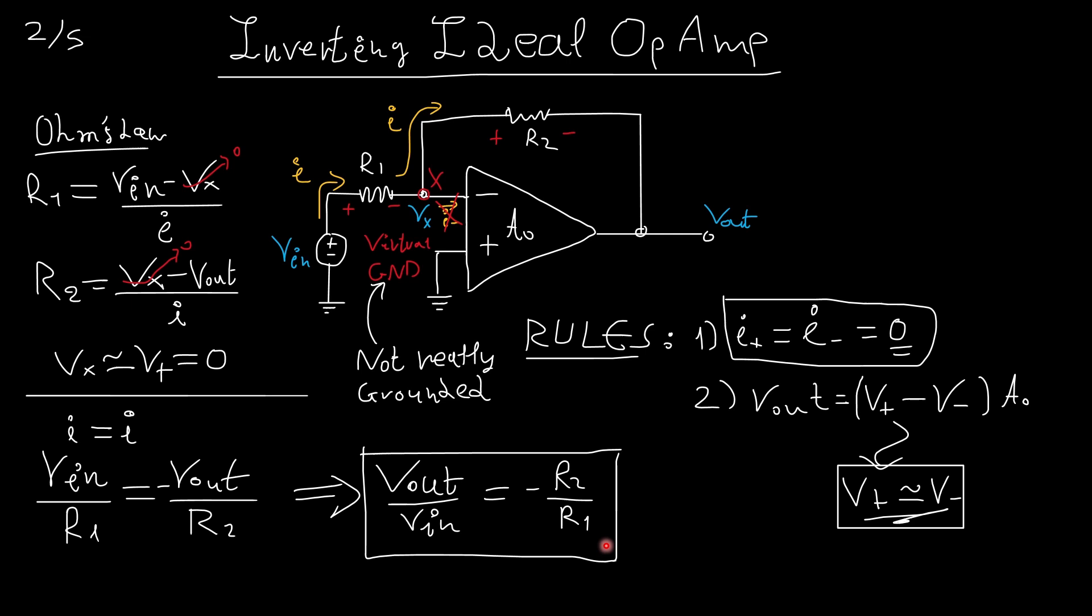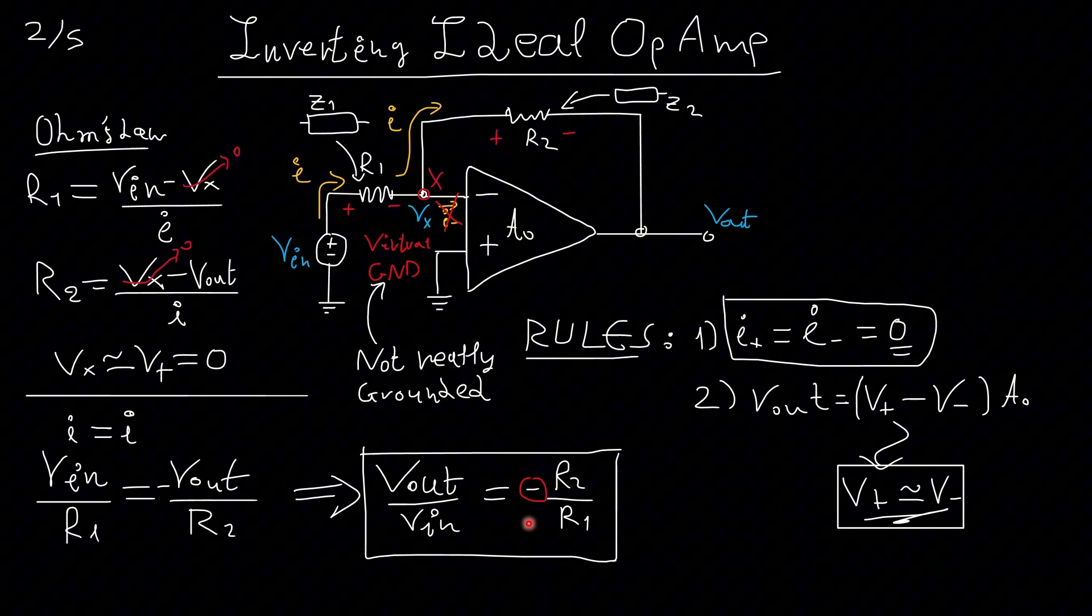This says to us that the output over the input is determined by the negative sign of R2 over R1. This negative sign here is the reason we call this an inverting op-amp.